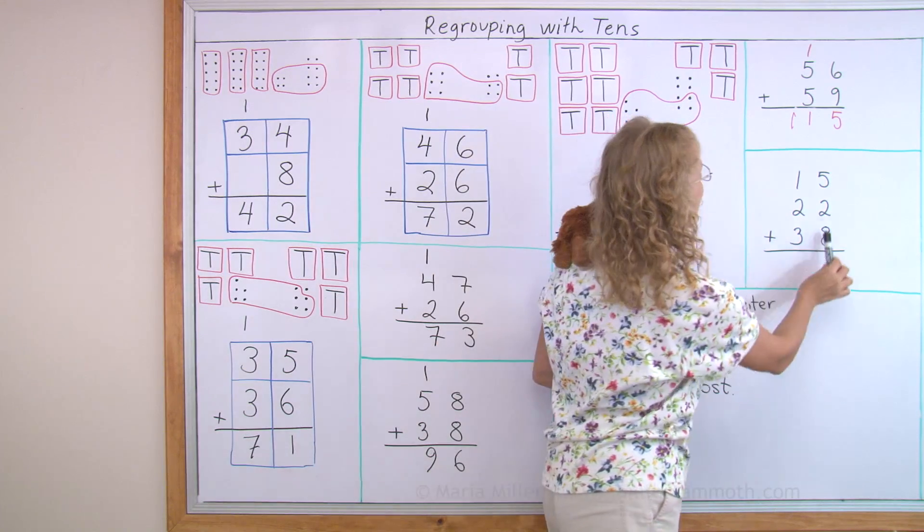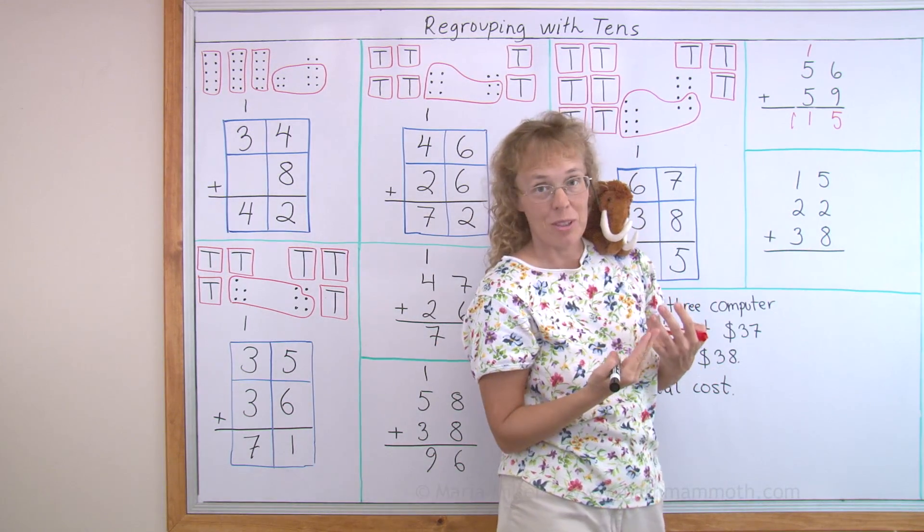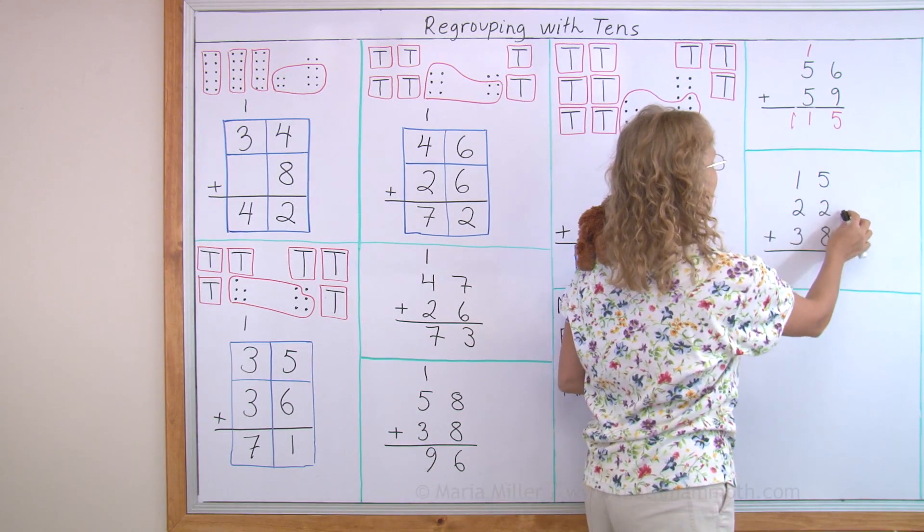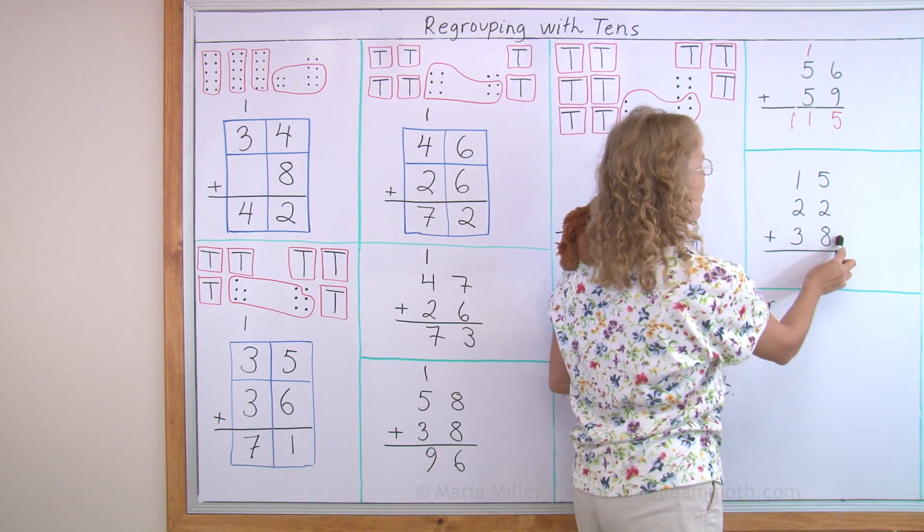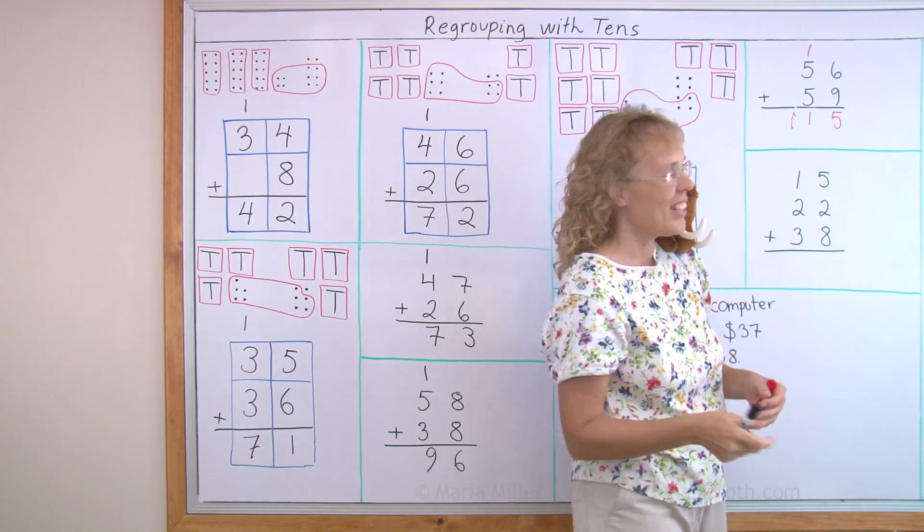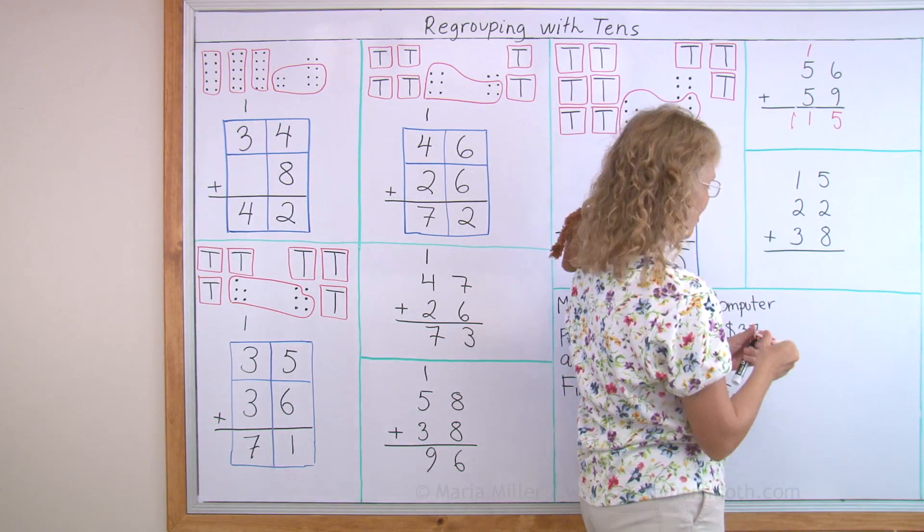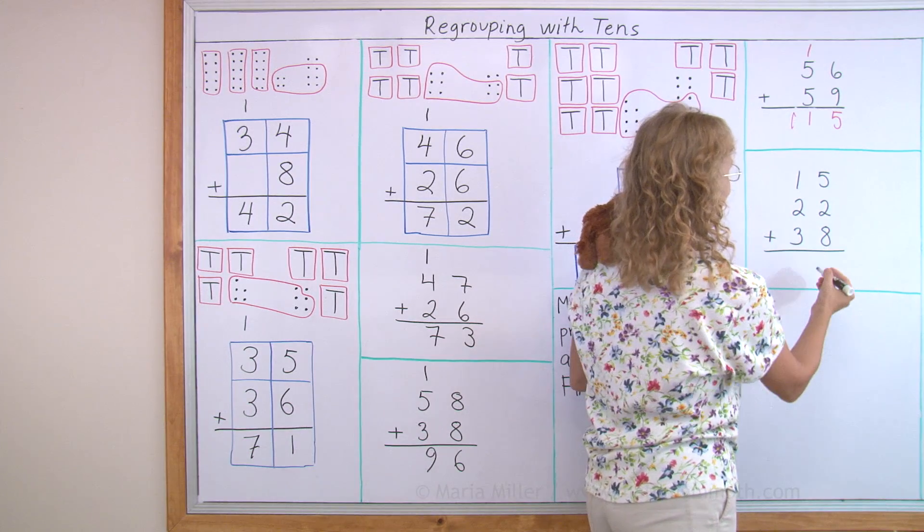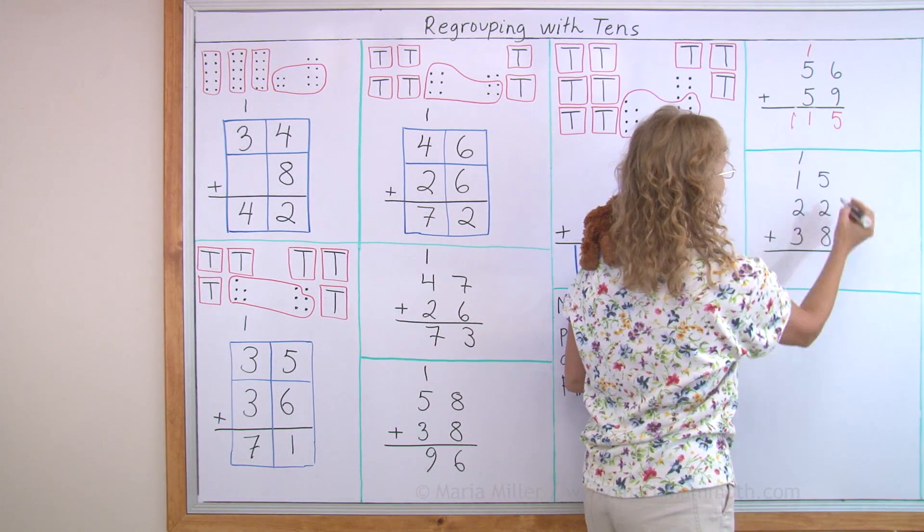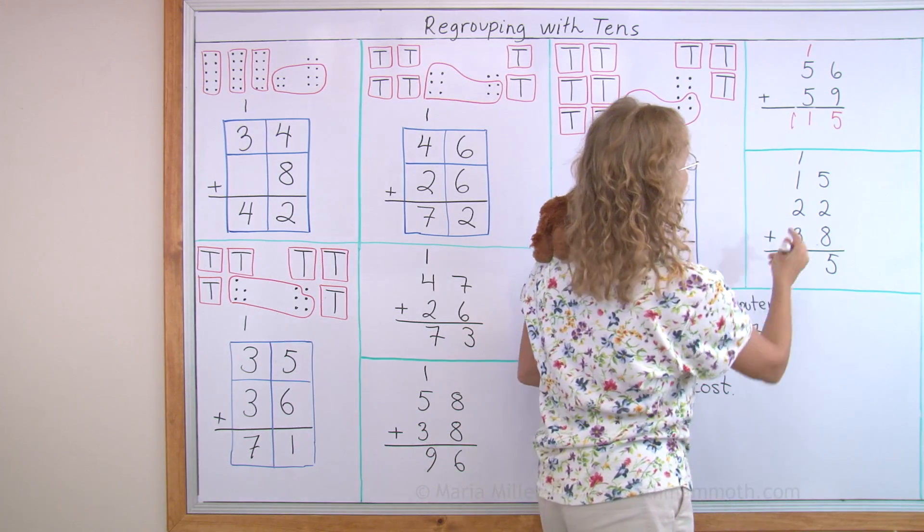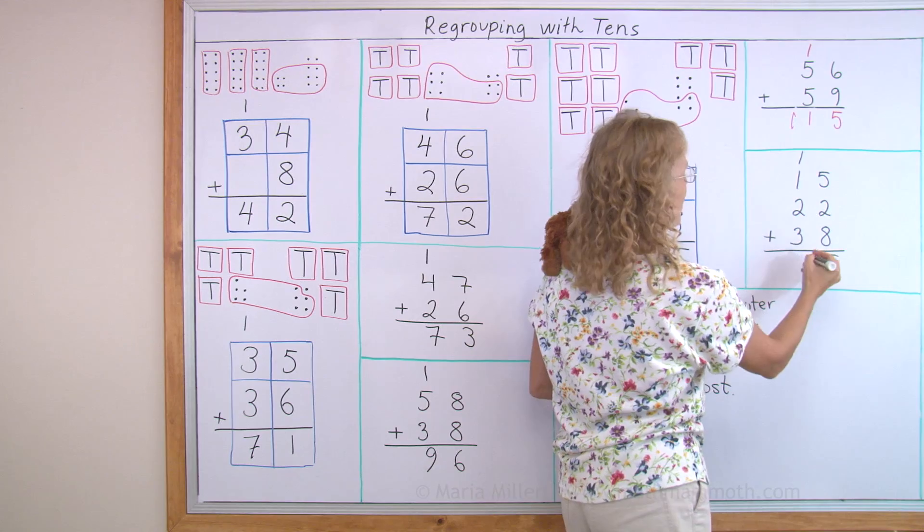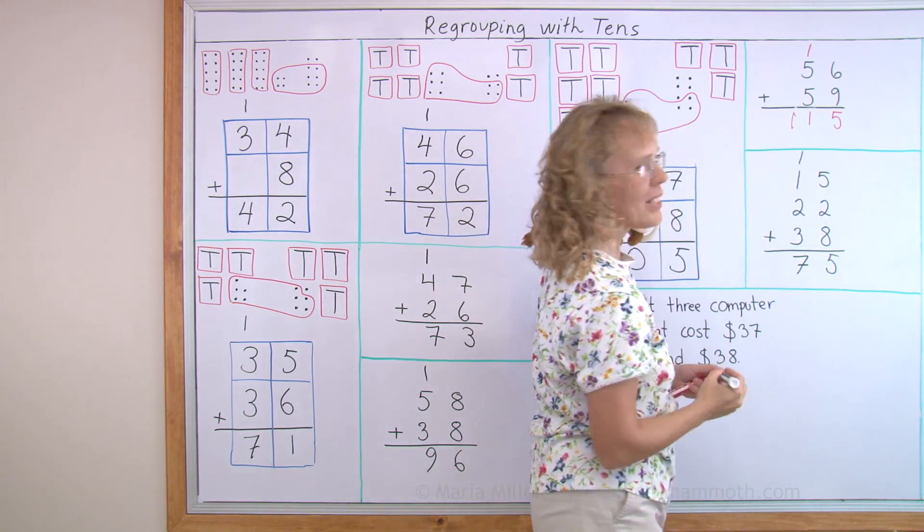One more. Over here, we're gonna add three numbers. But it works the same. We add here five plus two plus eight. But actually, it's easier to add eight plus two first, because that makes ten. So ten and five, fifteen. And again, fifteen is one ten here and five here, not the other way around. And then one plus one plus two, that's four, plus three is seven. That's easy, right?